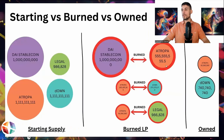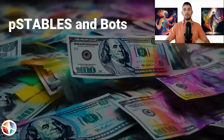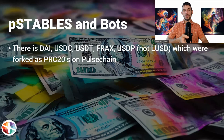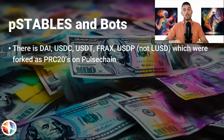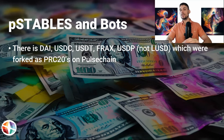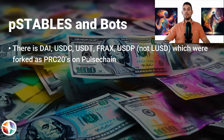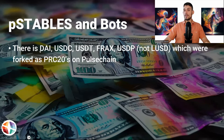The P-stables include DAI, USDC, USDT, FRAX, and USDP — the main ones forked with Pulse Chain. LUSD was also forked as a PRC20, but I would say LUSD is not included in the same category. Because its supply is in the trillions while the others are in the millions and billions, the others are more easily able to be pegged and stabilized to a dollar.